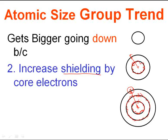As I add more energy levels, I have more shielding. In the first example, where I have one energy level, there is no shielding — why? There are no core electrons. Shielding is only done by core electrons. In the second example, yes, there is shielding done by the first energy level; the second one is the outer shell. In the third example, I have two energy levels providing shielding, or interference, for the outer energy level.